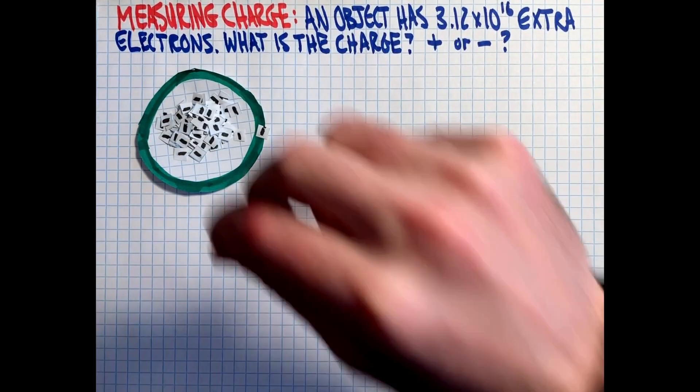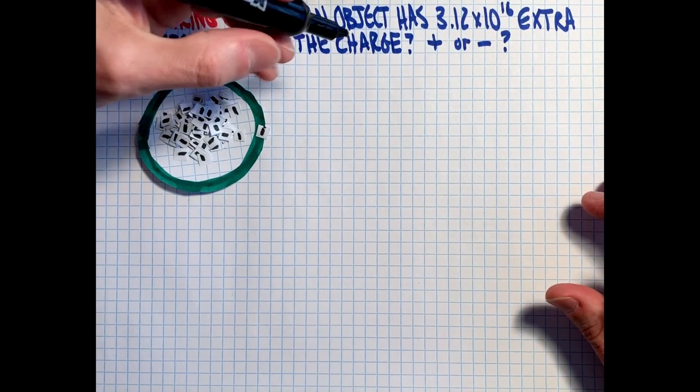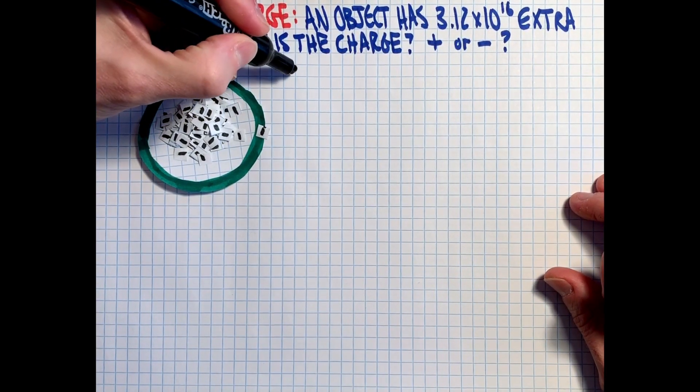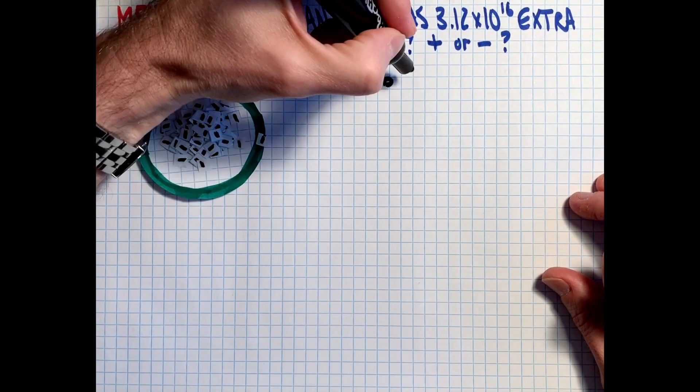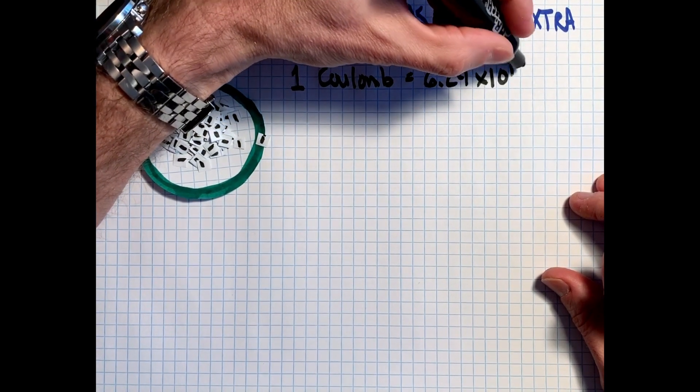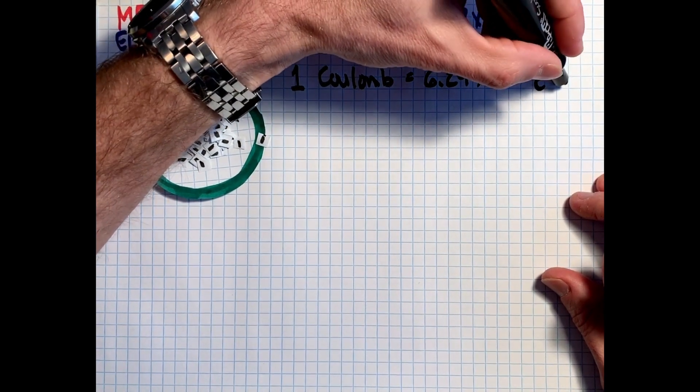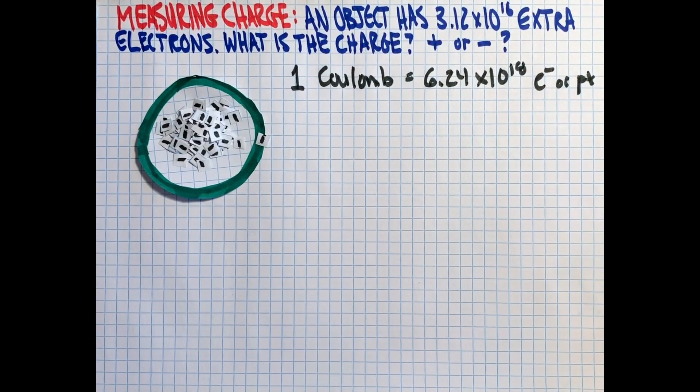So in this question, we're talking about negative charge, and so we will look at adding electrons. But that's the definition of a Coulomb. One Coulomb equals 6.24 times 10 to the 18, either electrons or protons, whether it's positive or negative.